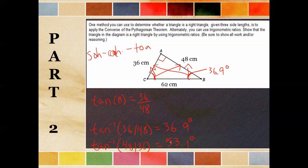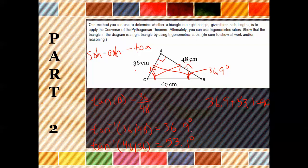Now we add up these two angles: 36.9 plus 53.1 does in fact give us 90. So we know this is a right triangle. Note that you don't have to use tangent — since we have all three sides, you could use sine, cosine, or tangent, whichever you want. Just make sure to use the inverse in order to find the angle. And that would be the end of your Part 2 test. Good luck!